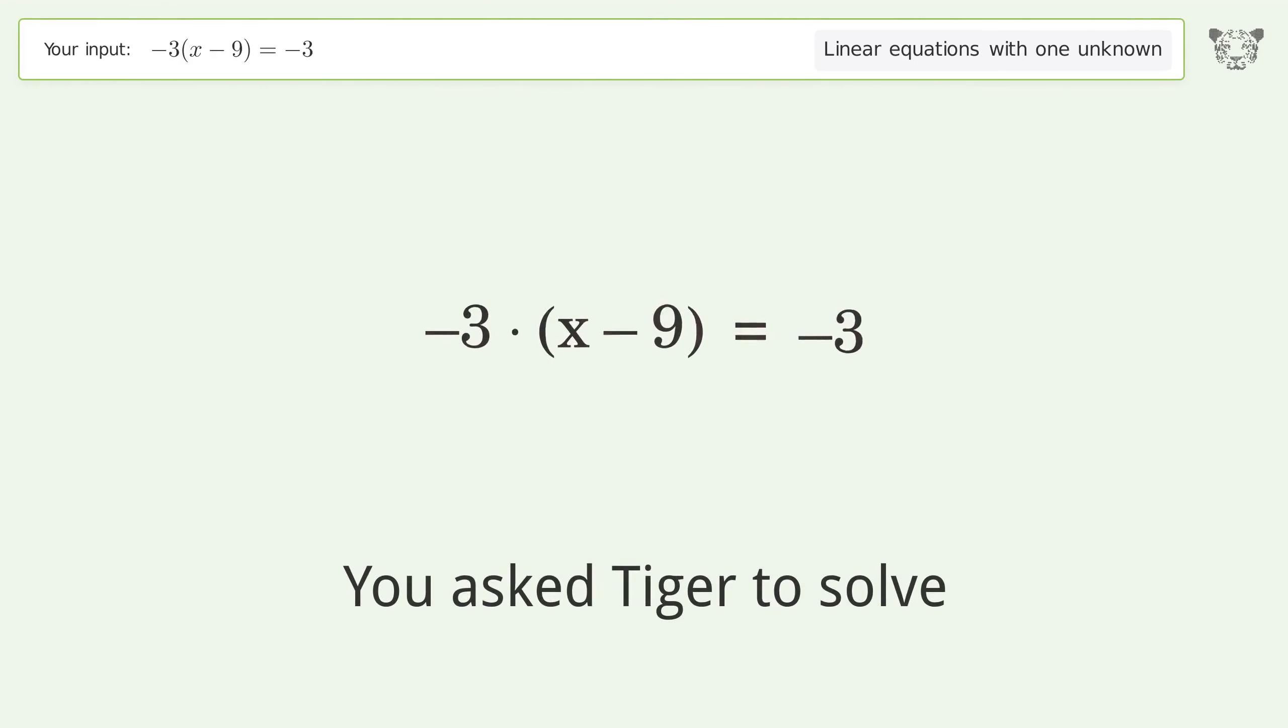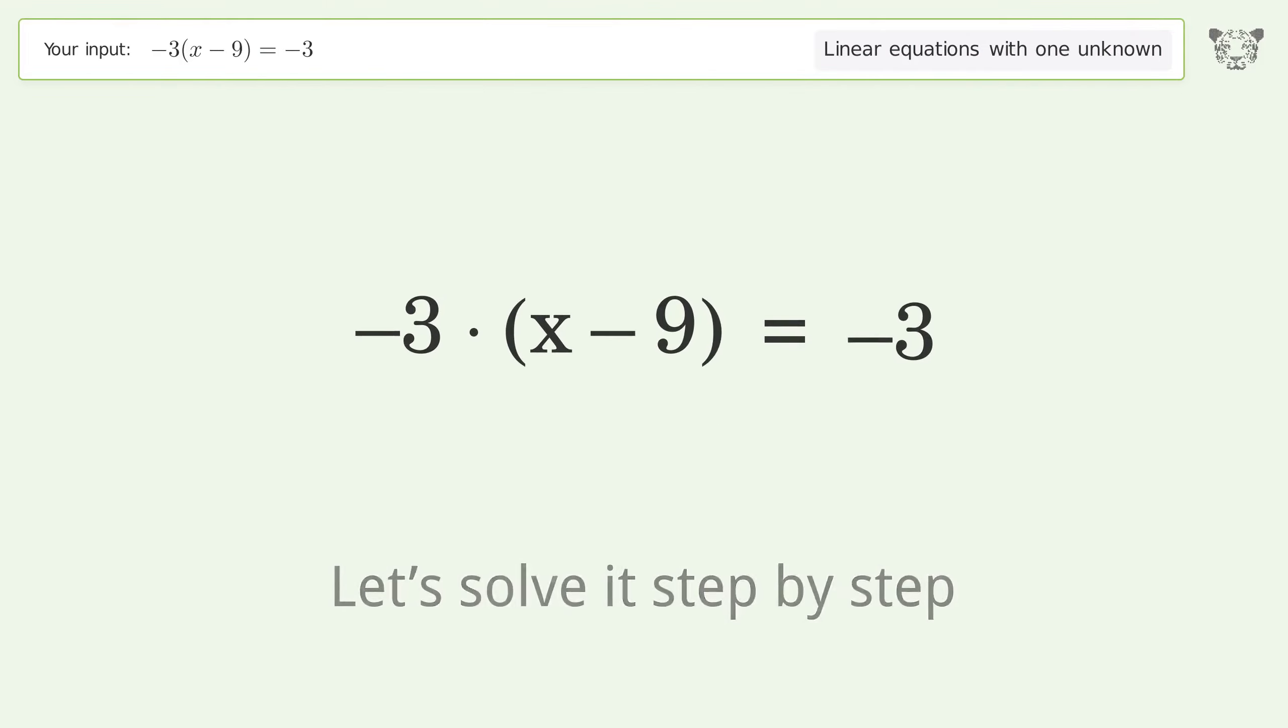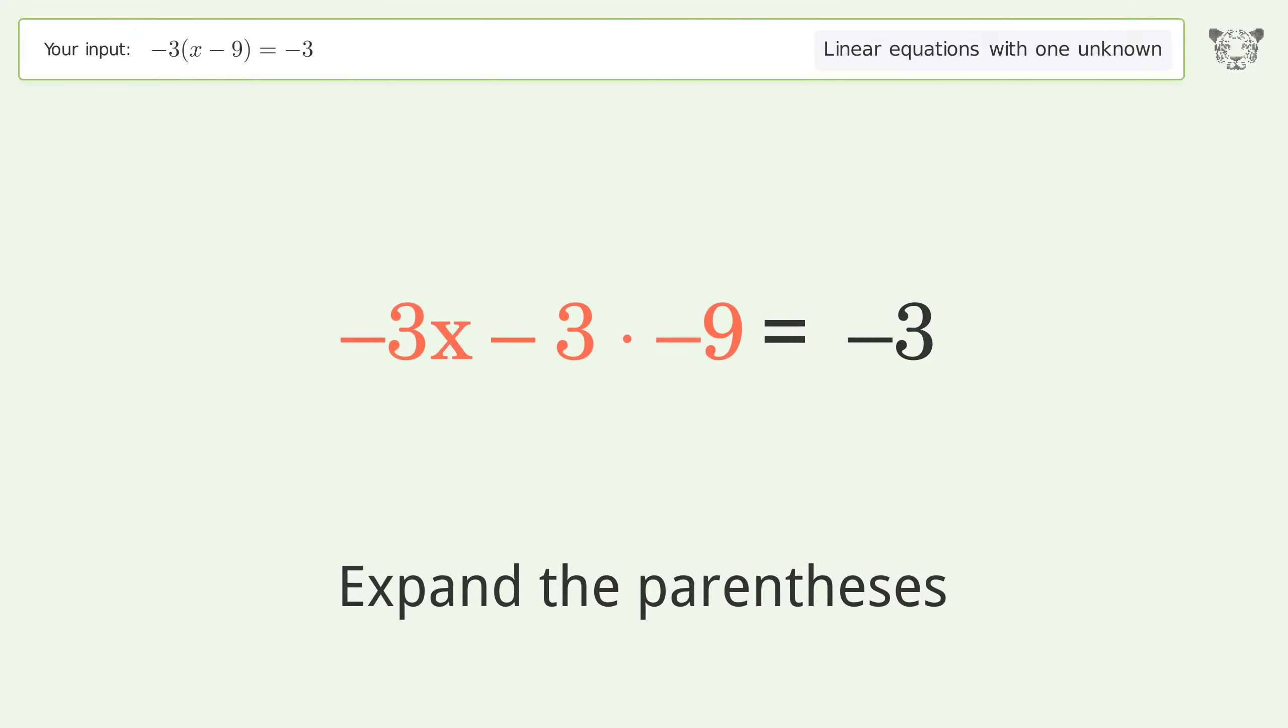You asked Tiger to solve this problem, which deals with linear equations with one unknown. The final result is x equals 10. Let's solve it step by step. Simplify the expression, expand the parentheses, and simplify the arithmetic.